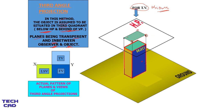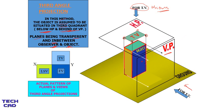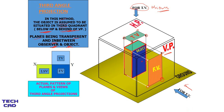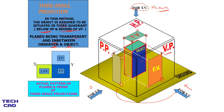For the top view in third angle projection, the observer is below and the horizontal plane is between the object and the observer. The meeting of vertices on the horizontal plane gives the top view. For the front view, the vertical plane is in front with the observer here, and lines of sight meet the vertical plane to give the front view. For the left side view, the observer comes to this side and there is a profile plane between the observer and the object — confirming third angle projection — and joining vertices gives the side view.